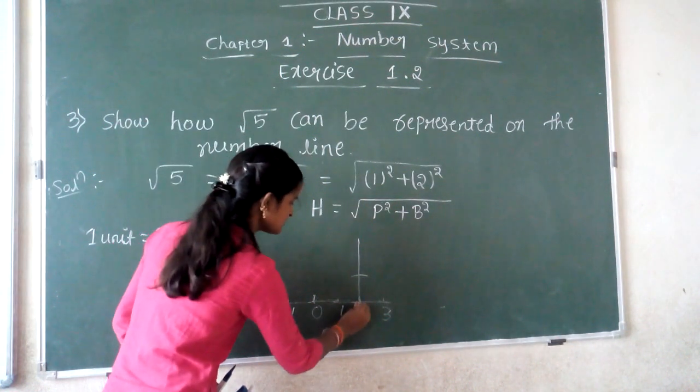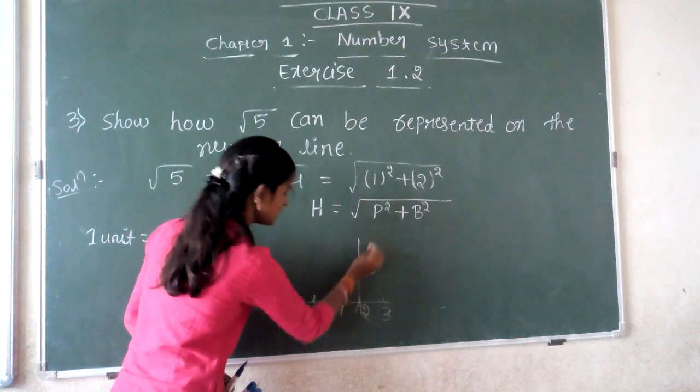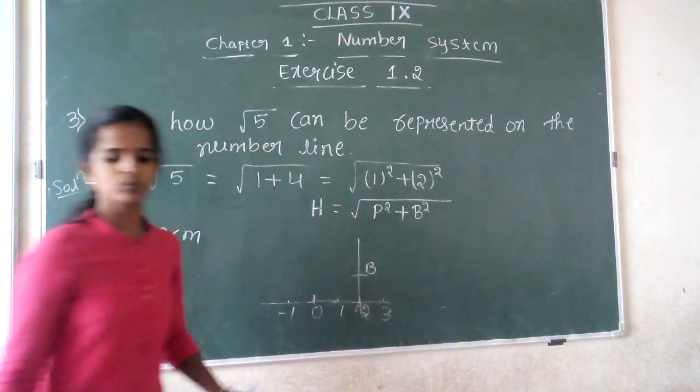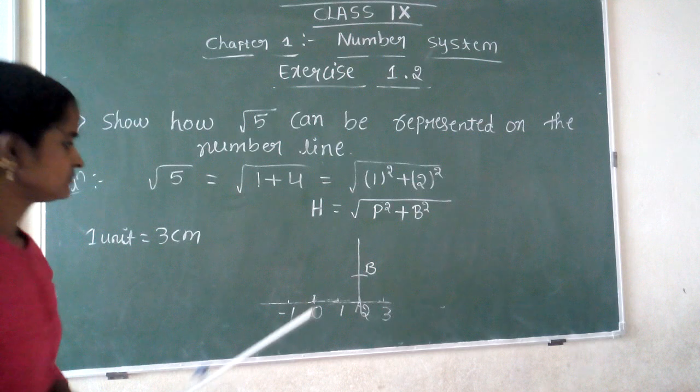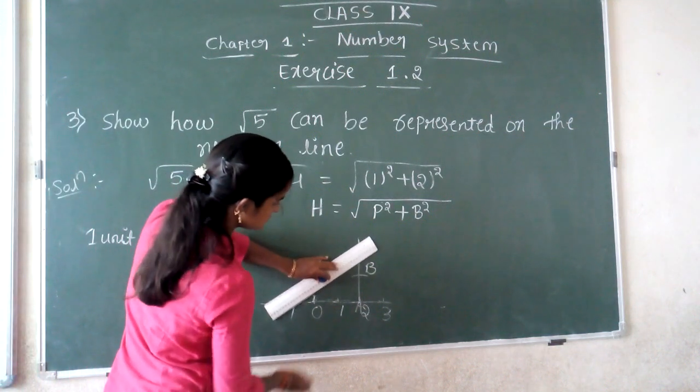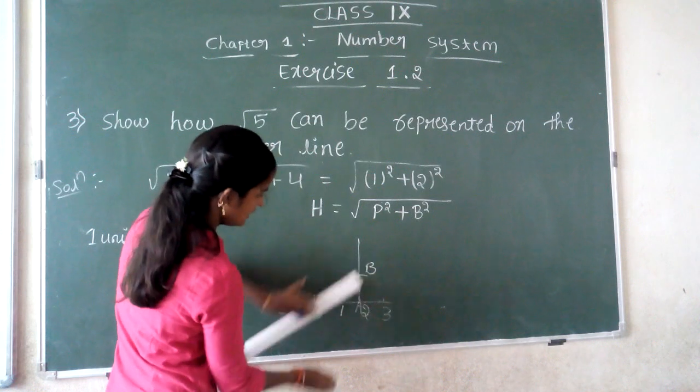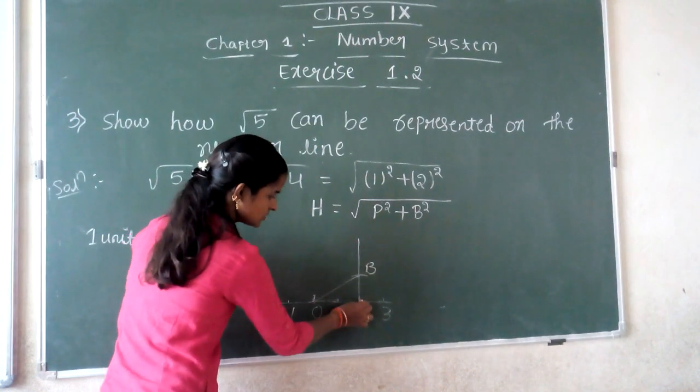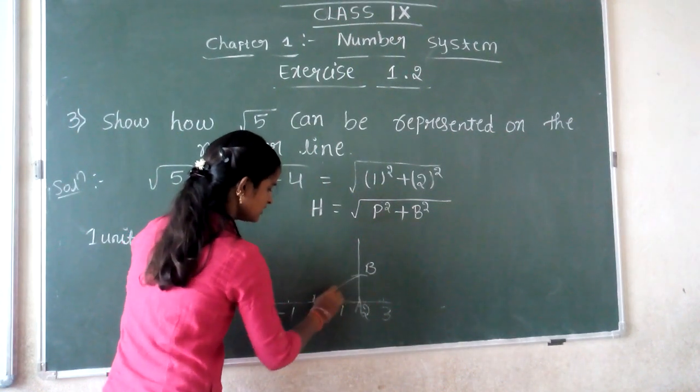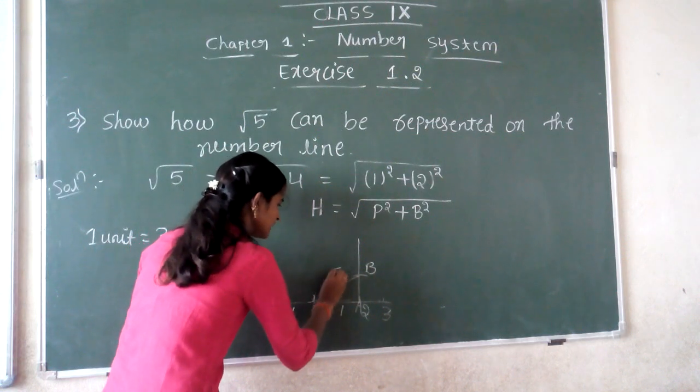Here, suppose this point is A, and this one you take as B. After that, join O and B. The triangle's hypotenuse OB represents √5.